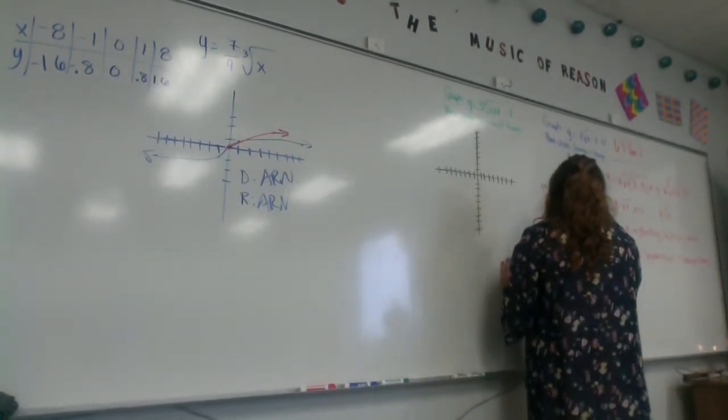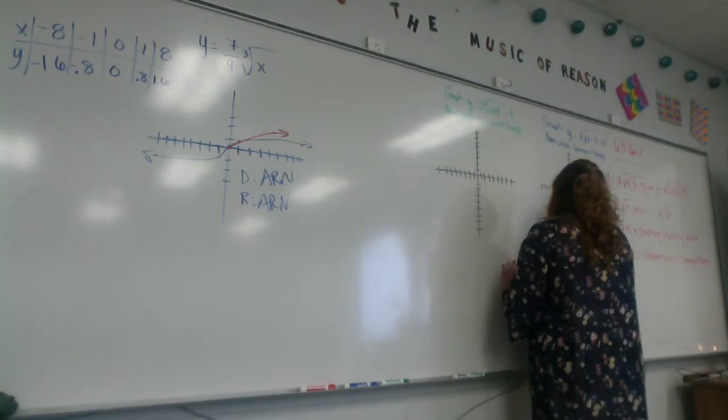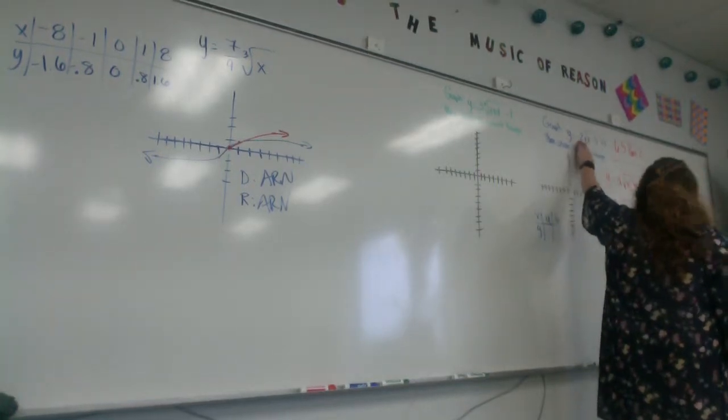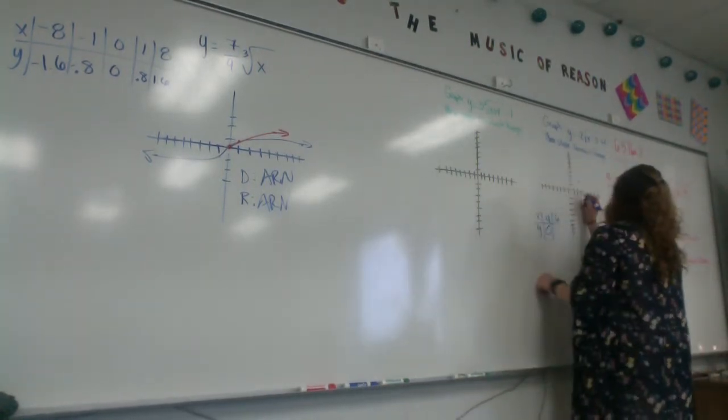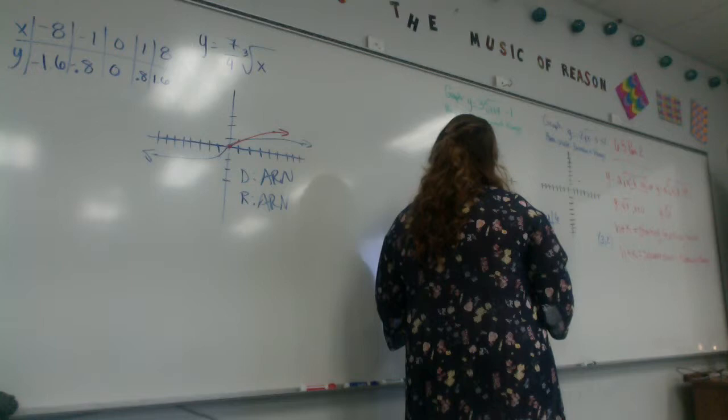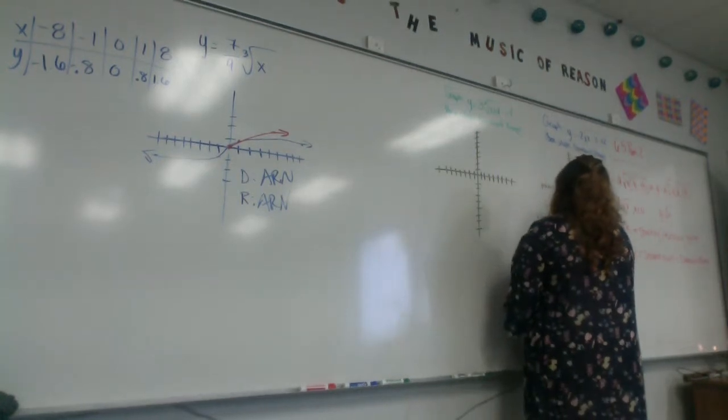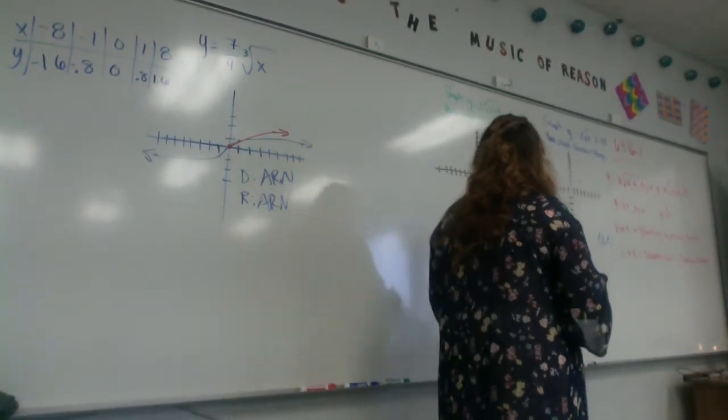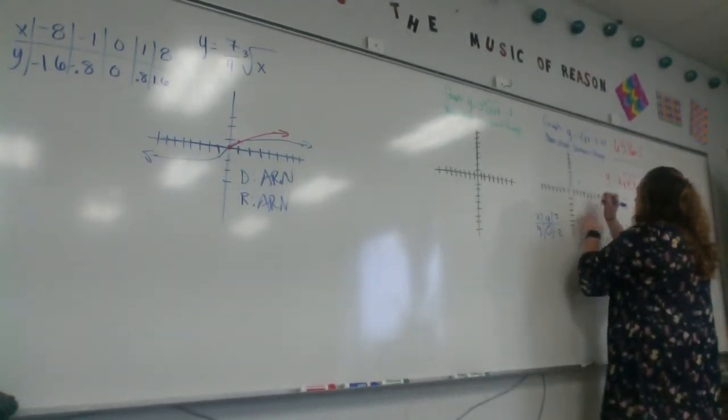So I'm going to plug in a 4 and a 6. Actually, I'm going to plug in just a 4 and a 6. If I plug in a 4, I get 4 minus 3, which is 1. Square root of 1 is 1. 1 times negative 2 is negative 2. And then negative 2 plus 2 is 0. So 4, 0. Now I plug in 6. Let's plug in a 7, because it will make it easier. 7 minus 3 is 4. Square root of 4? 2. 2 times negative 2? Negative 4. And negative 4 plus 2? Negative 2. So 7, negative 2, and I have my graph.